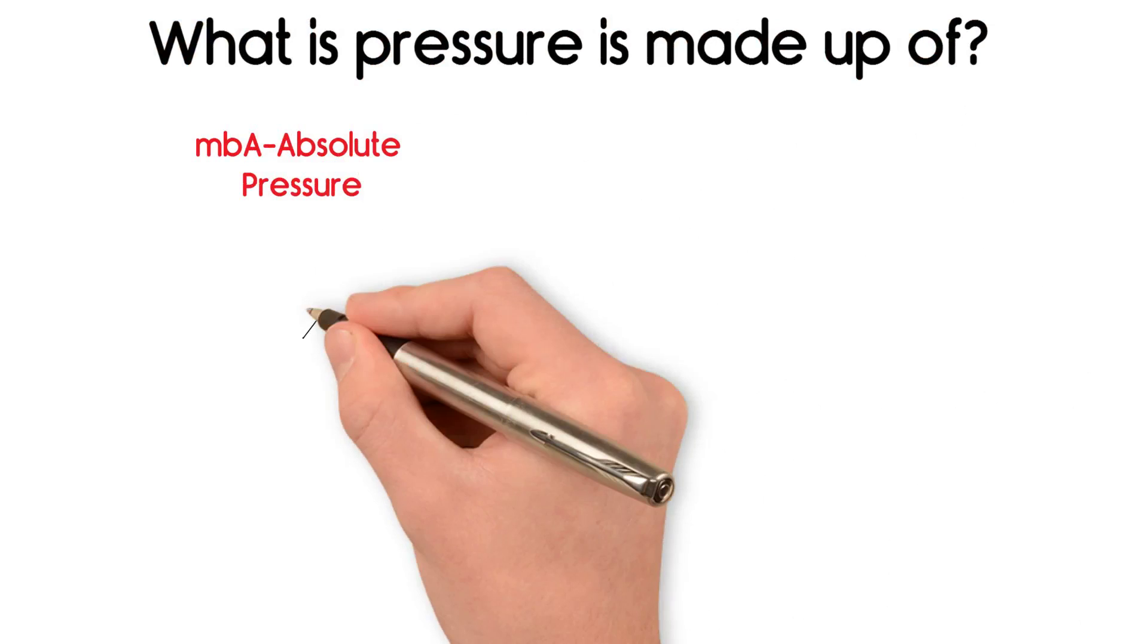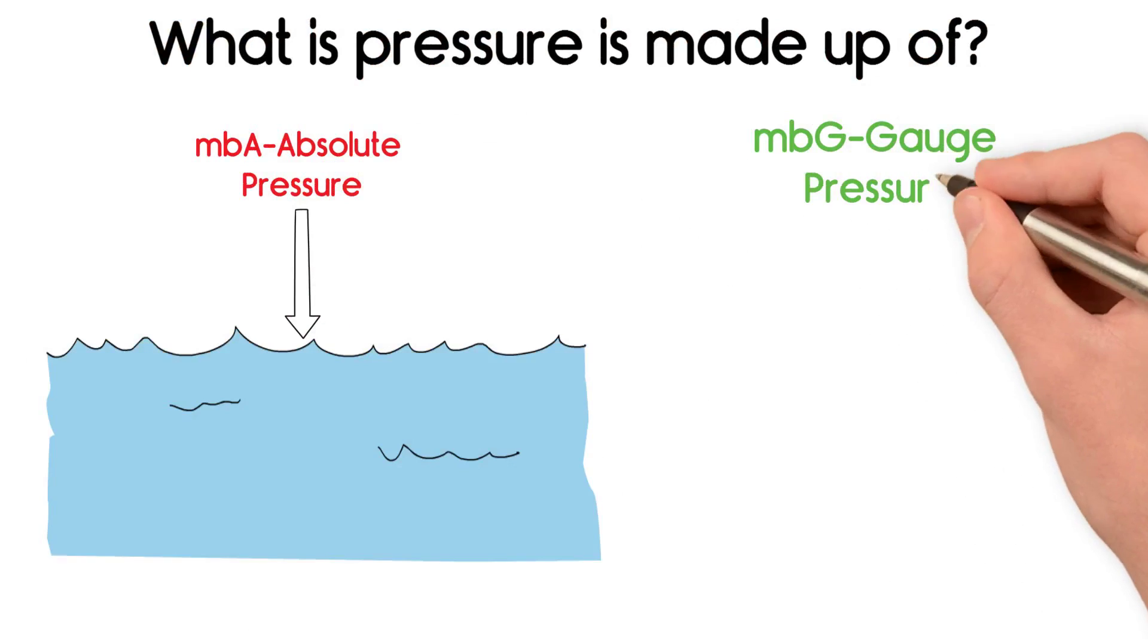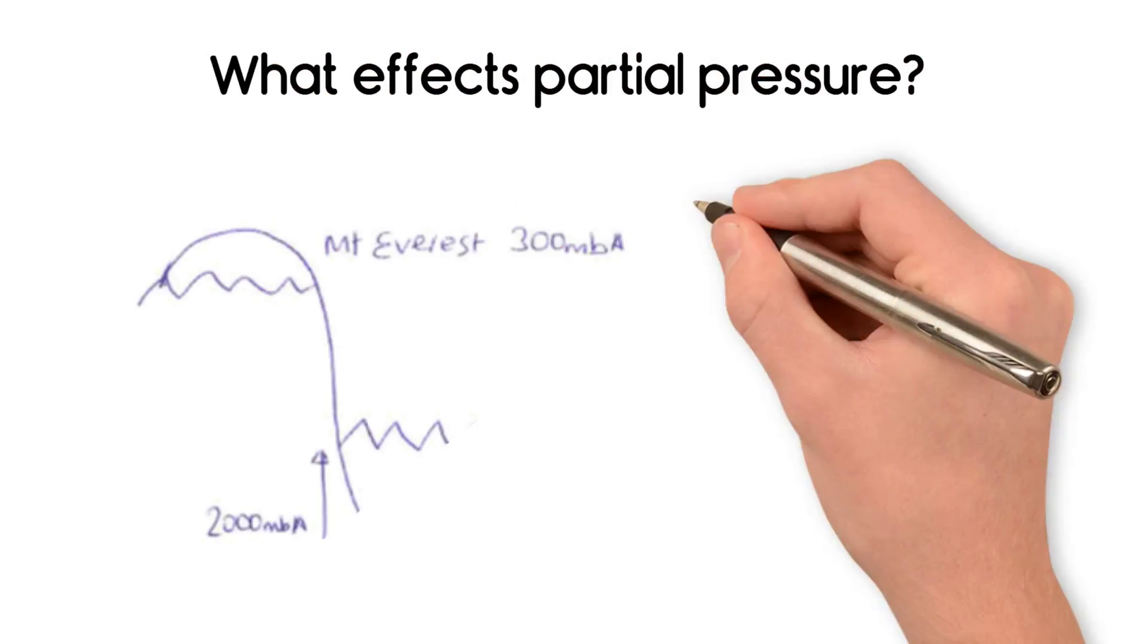Mba Absolute Pressure Above Sea Level, Mbg Gauge Pressure Below Sea Level. What affects partial pressure?